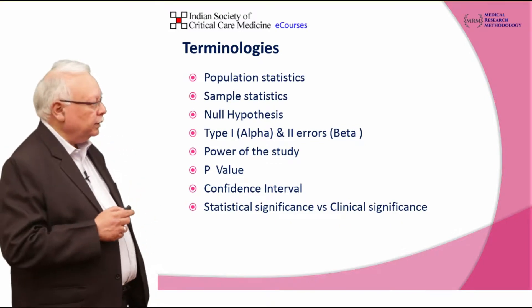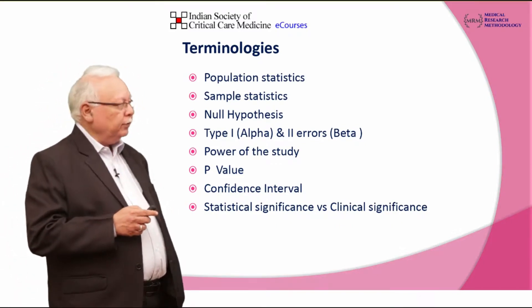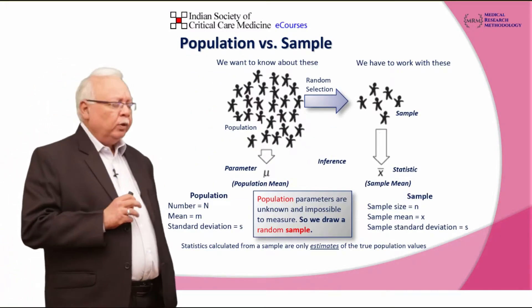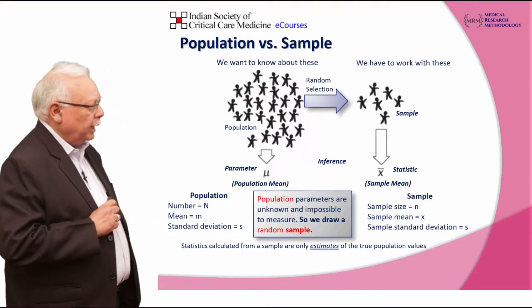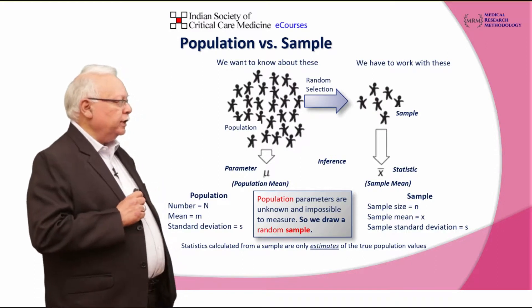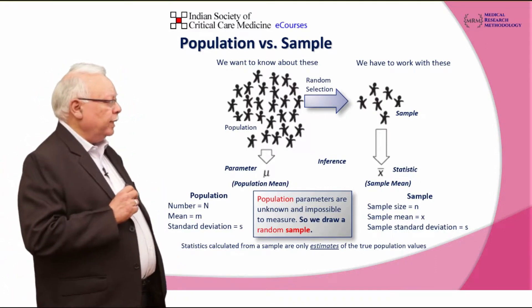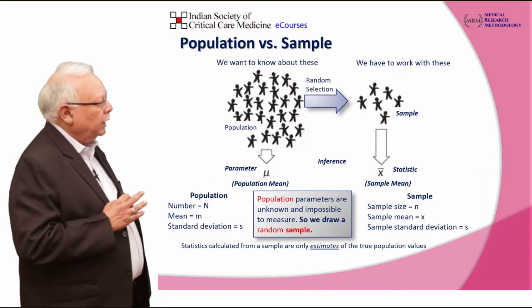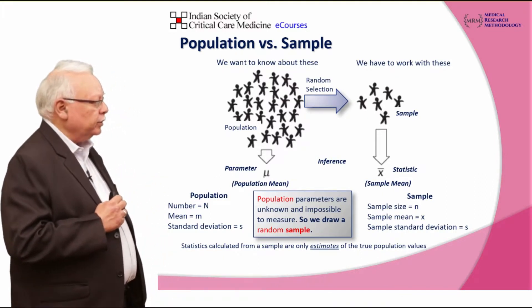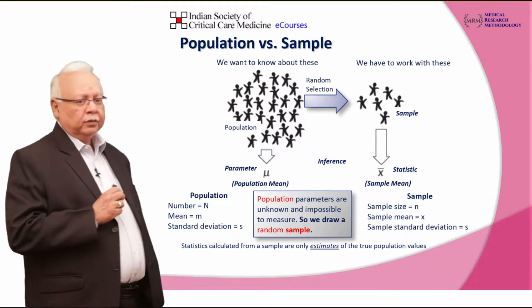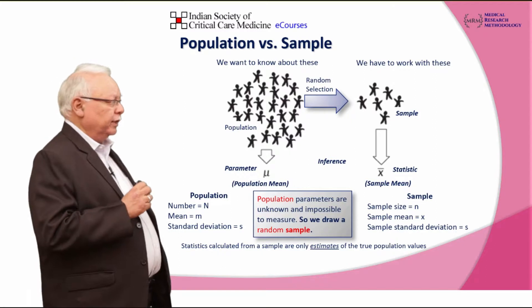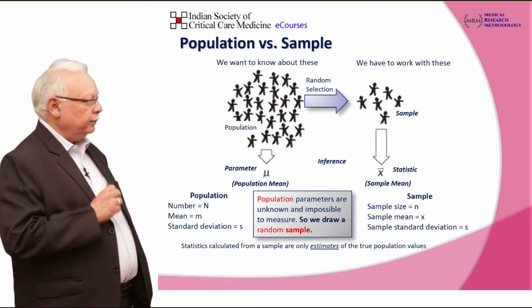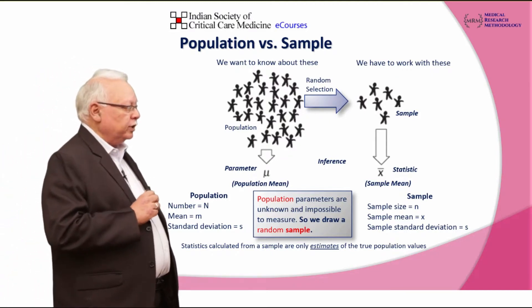These are the terminologies you are going to hear or read many times in different articles. Normally whenever a study is done we want to know the entire population, and the terms used are: the number of population is represented by N, the mean is by M, and standard deviation. A random selection from the population to a sample is done, and the sample size is small n.